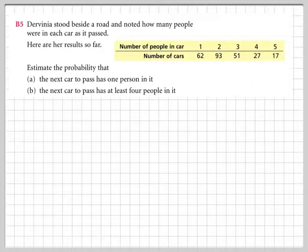Estimate the probability that the next car to pass has one person in it. So from this table we can actually estimate probabilities. This is called using relative frequency.